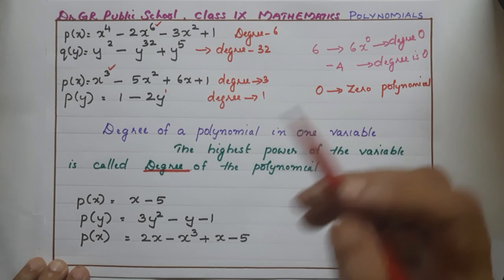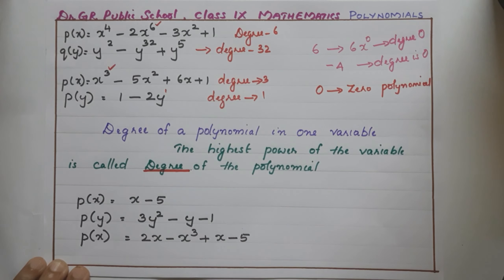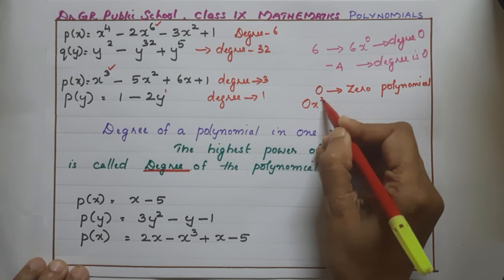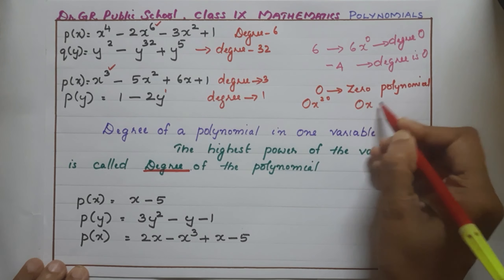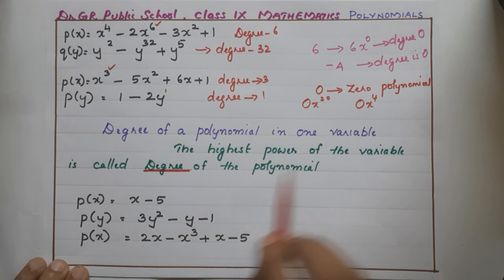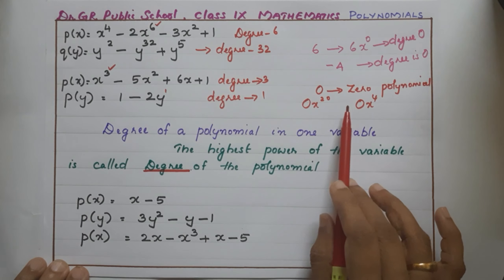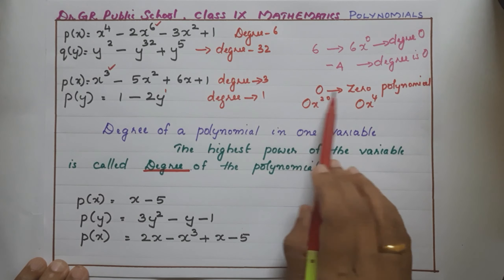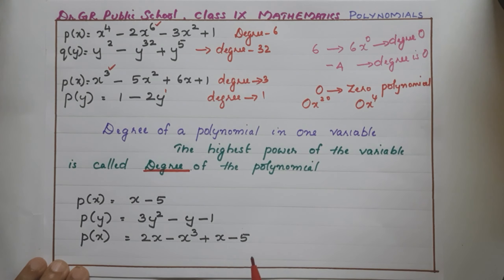Why? Because 0 can be written with a variable with any power. For example, 0 can be written as 0·x²⁰, or it can be written as 0·x⁴. So we cannot say one specific value for the power of the variable. That is why the degree of a zero polynomial is not defined.